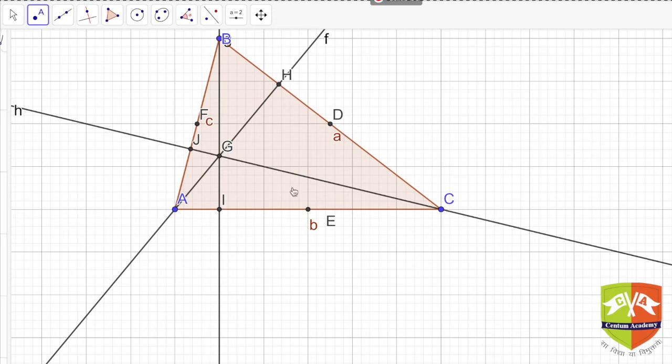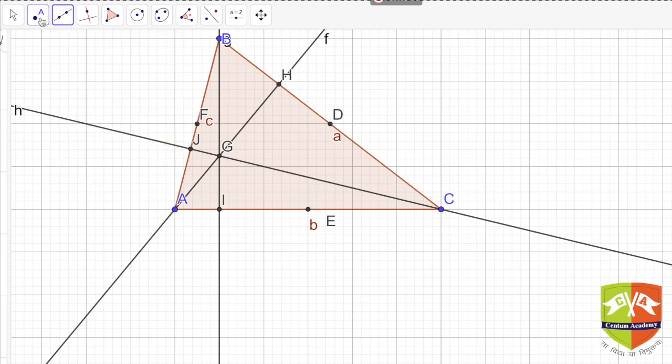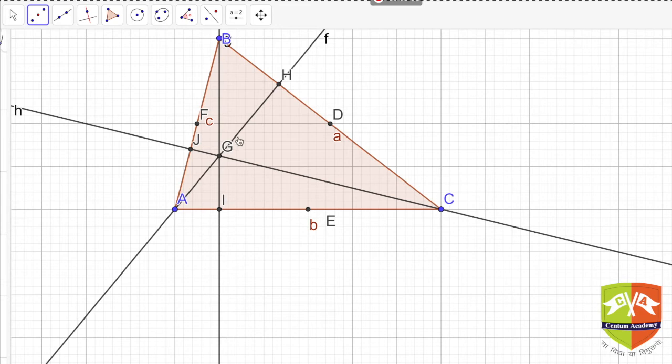These are how many points did we get? Let's count them. First of all D, E, F - three points, and H, I, J - six points. We need three more. What are these three more? It's nothing but midpoints of BG, AG and GC. So let me draw the midpoints. K is the midpoint, then L is the midpoint of AG, and M is the midpoint of CG. So can you see there are nine points now? Let's count: D, H, K, F, J, L, I, E, M - these are the nine points.